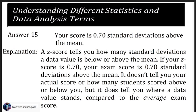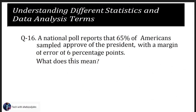Explanation: a z-score tells you how many standard deviations a data value is below or above the mean. If your z-score is 0.7, your exam score is 0.7 standard deviations above the mean. It does not tell you your actual score or how many students scored above or below you, but it does tell you where a data value stands compared to the average exam score.